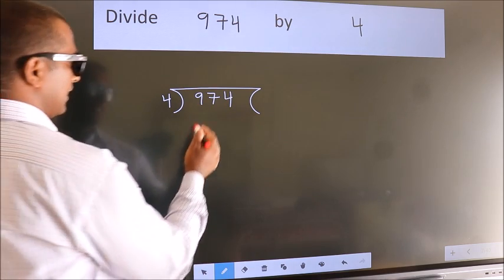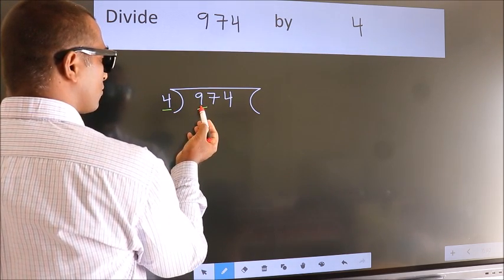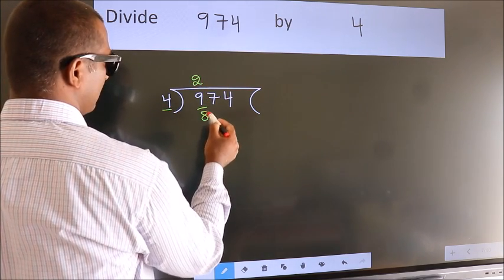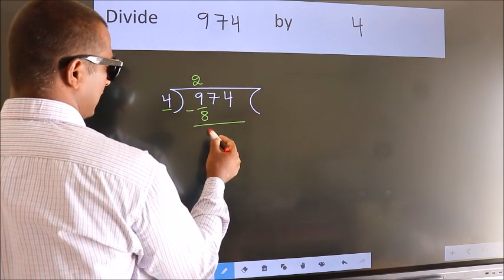Next. Here we have 9, here 4. A number close to 9 in 4 table is 4 2s, 8. Now we should subtract. We get 1.